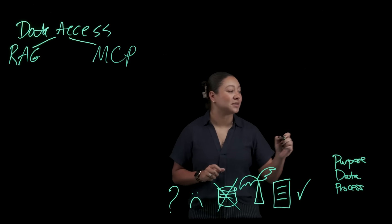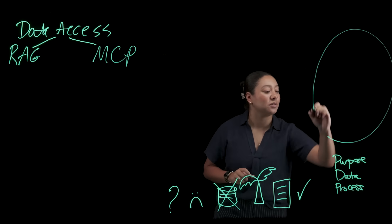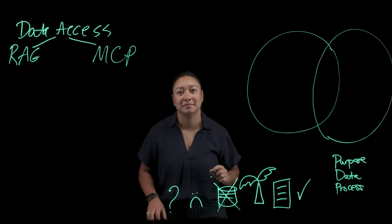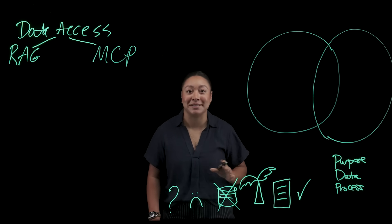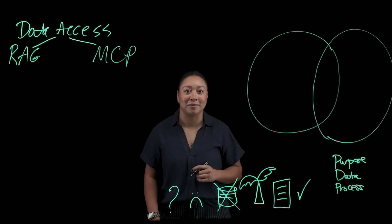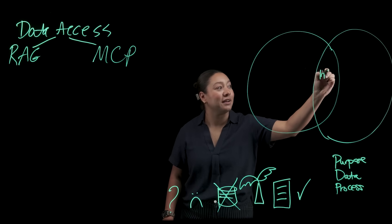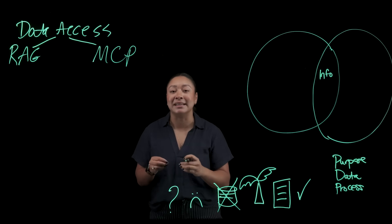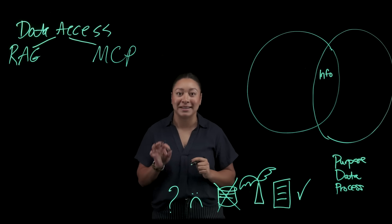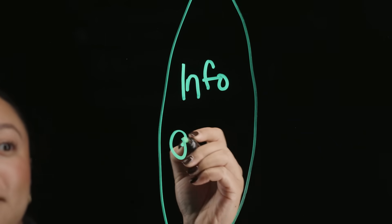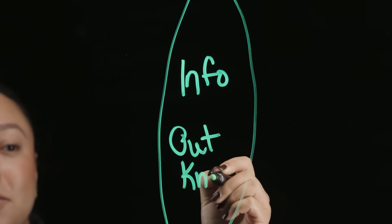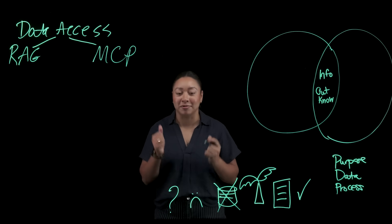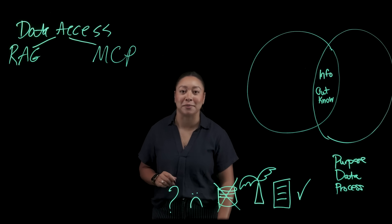Let's talk similarities first — I'll build these into a Venn diagram with the similarities in the middle. RAG and MCP are very similar in many ways. For example, they both aim to provide information, and the data they're accessing doesn't actually live in the large language model but is instead provided by outside knowledge. Both can also reduce hallucinations by grounding the model in real-time or specialized information.